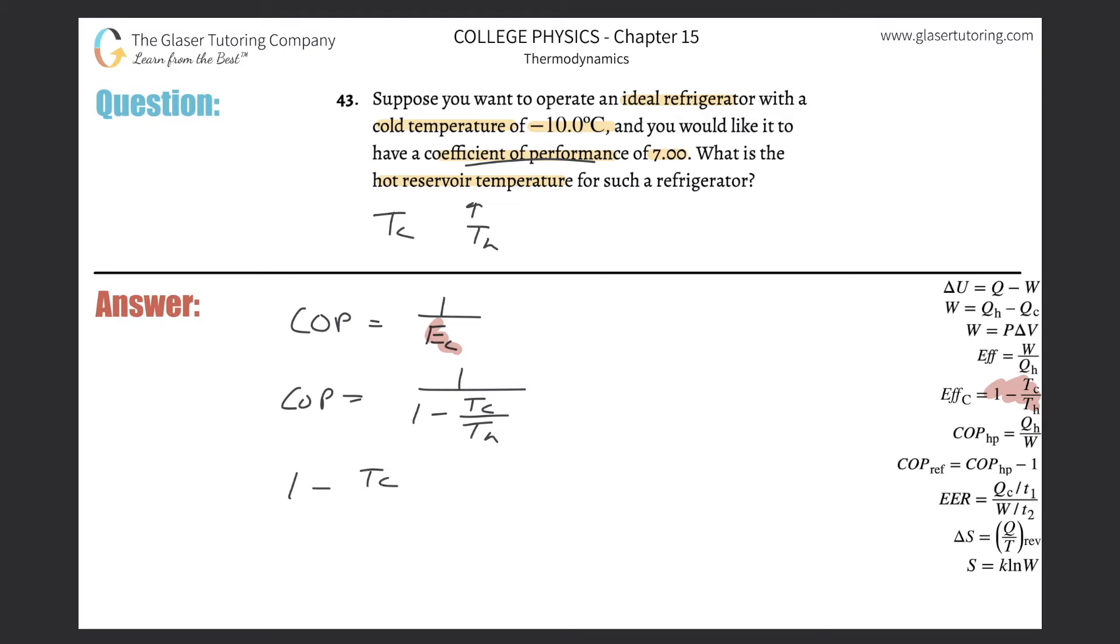one minus T sub C over T sub H will equal one divided by the coefficient of performance. I'm basically just literally taking whatever's in the denominator bringing it up, whatever in the numerator bringing it down. Okay, we've seen that little trick many times. So now I'm going to, just to get this positive, I'm going to add it to the left and then I'm going to subtract this from the right on over to the left.